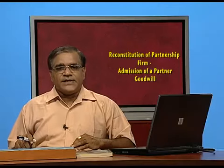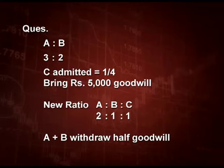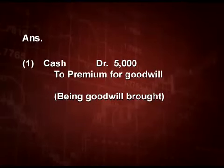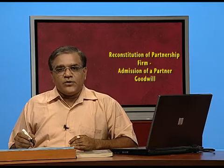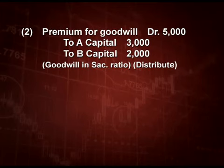Let us understand this by an example. A and B are two partners sharing 3:2. C is admitted for one-fourth share. He brings rupees 5,000 as goodwill. The new ratio of A, B, C is 2:1:1. A and B withdraw half the goodwill. First entry: C is bringing 5,000 as goodwill — cash debit to premium for goodwill, rupees 5,000. Next entry: goodwill is distributed between the old partners in sacrificing ratio — premium for goodwill debit 5,000, distributed to A and B in sacrificing ratio.